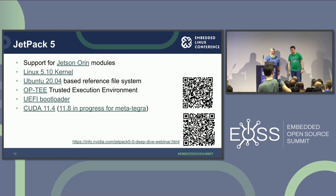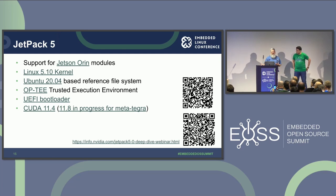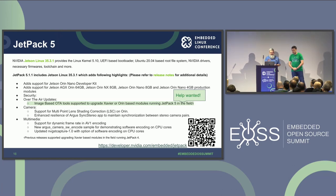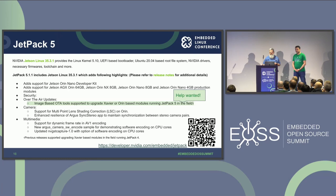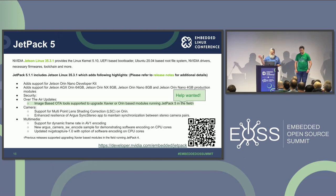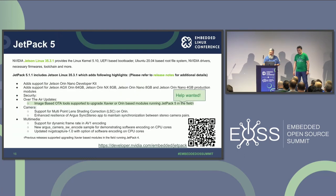If you want to follow that progress, the first QR code links to that PR. The second QR code points to a deeper dive into the new Jetpack 5 stuff — a presentation by NVIDIA, some of which we used in this talk. One thing we're excited about: this is the first time NVIDIA has presented their OTA mechanism. It's different from what we'll discuss shortly, but we need help getting this Jetpack 5 OTA implementation into MetaTegra — it's not there yet.